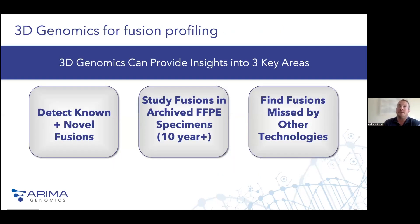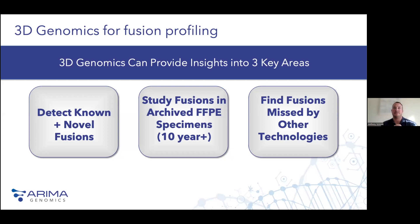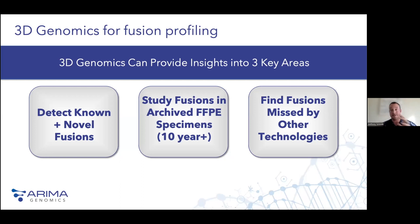This approach is really valuable for three things. First, it enables you to detect known oncogenic structural variants like gene fusions that drive cancer, as well as novel fusions not previously described. Second, because it's DNA-based rather than RNA-based, it helps you go back in time to analyze well-archived specimens of 10-plus years. And third — probably most exciting — is deploying this technology to find fusions not detected by other technologies in a clinical setting.